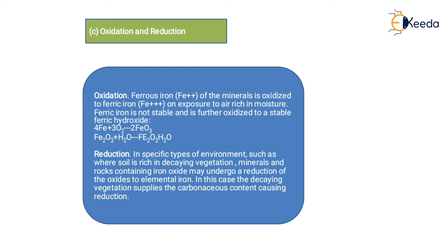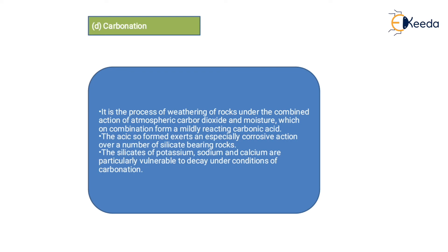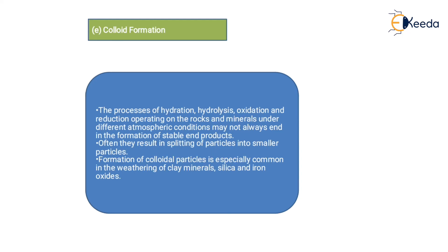Reduction: in specific types of environments, such as when soil is rich in decaying vegetation, minerals and rocks containing iron oxide may undergo reduction of oxide to elemental iron. The decaying vegetation supplies carbonaceous content causing the reduction. In carbonation, atmospheric oxygen and water combine with the rock, and the original rock containing silicate minerals starts to decay under the condition of carbonation.